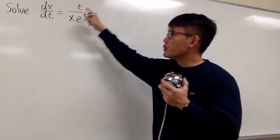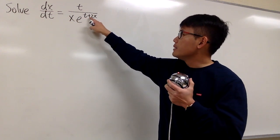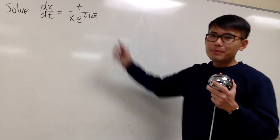We have dx/dt is equal to t over x times e to the t plus 2x power. How is this separable?